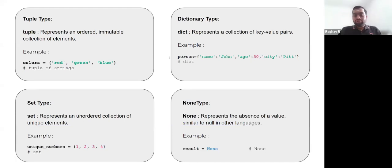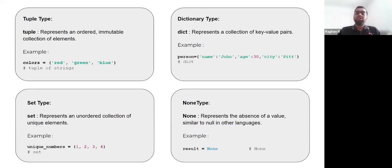We also have the dictionary data type, which is basically a storage mechanism for key-value pairs. You can have any key that represents any value, and then you can have multiple key-value pairs inside the same dictionary. You can also have different data types for key and value pairs, as shown in this example.